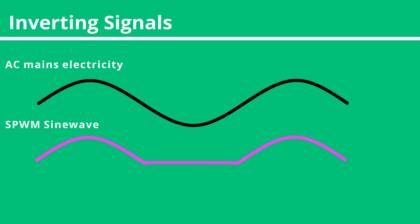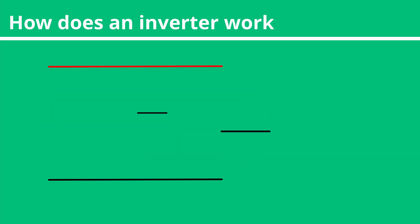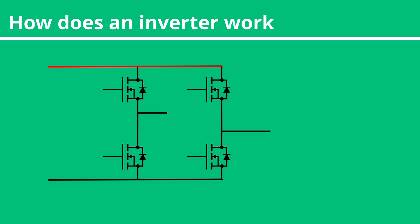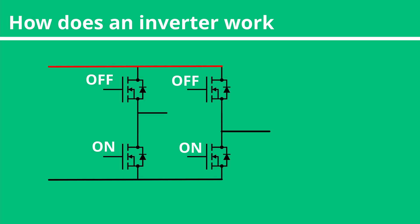An inverter basically allows you to flip the polarity of two wires. Building an inverter is not that difficult. We start by taking four MOSFETs and putting them in a full bridge arrangement, allowing us to switch either wire positive or negative. If we turn the top MOSFET on, it will pull the center connection positive, and if we turn the bottom MOSFET on, it will pull the center connection negative.